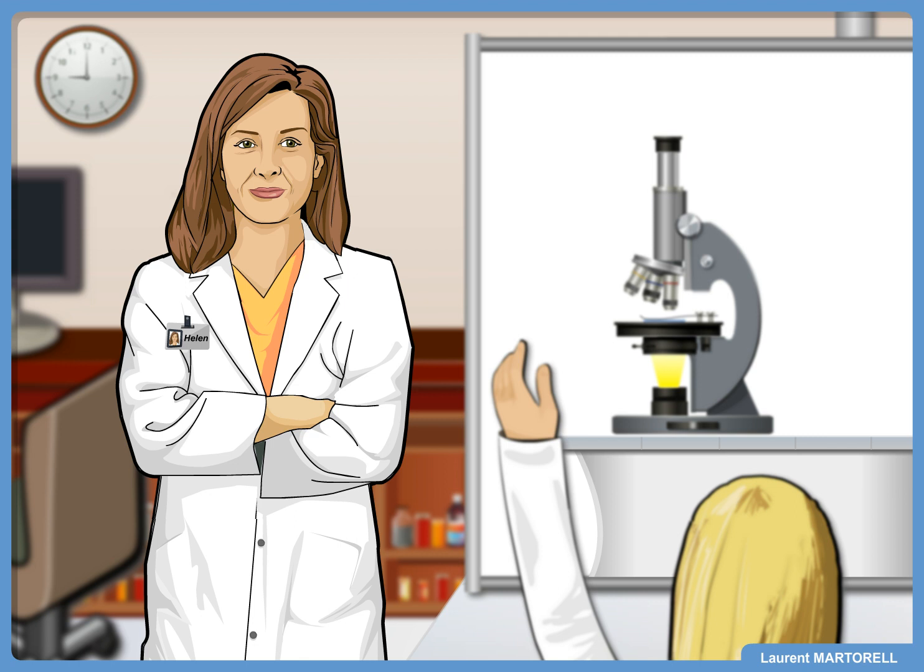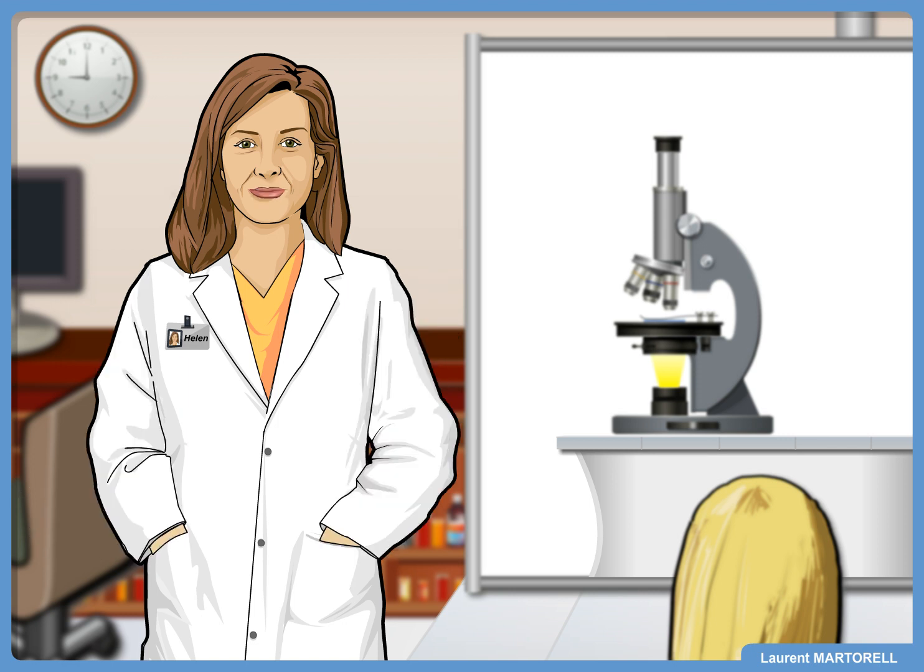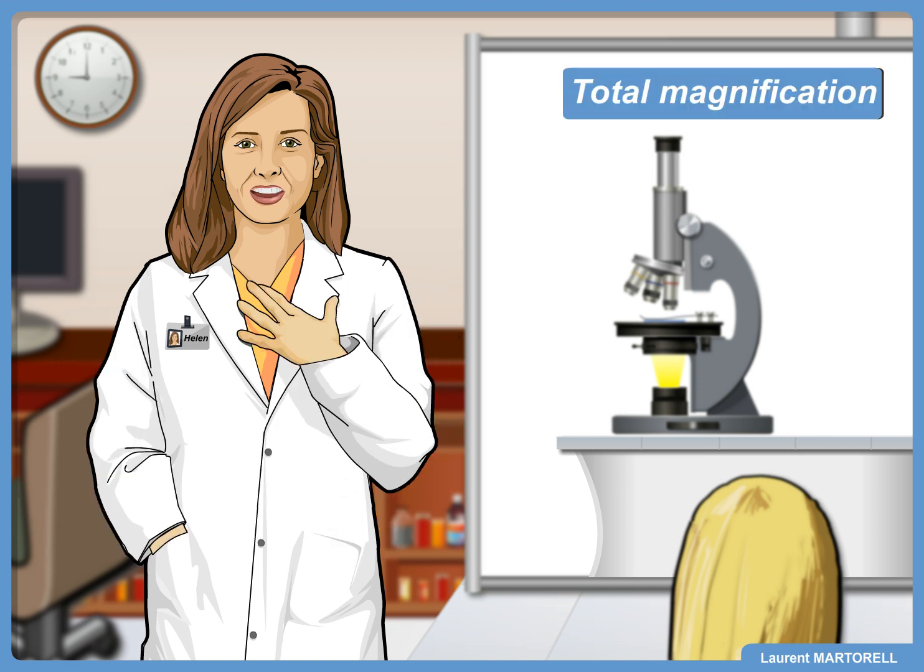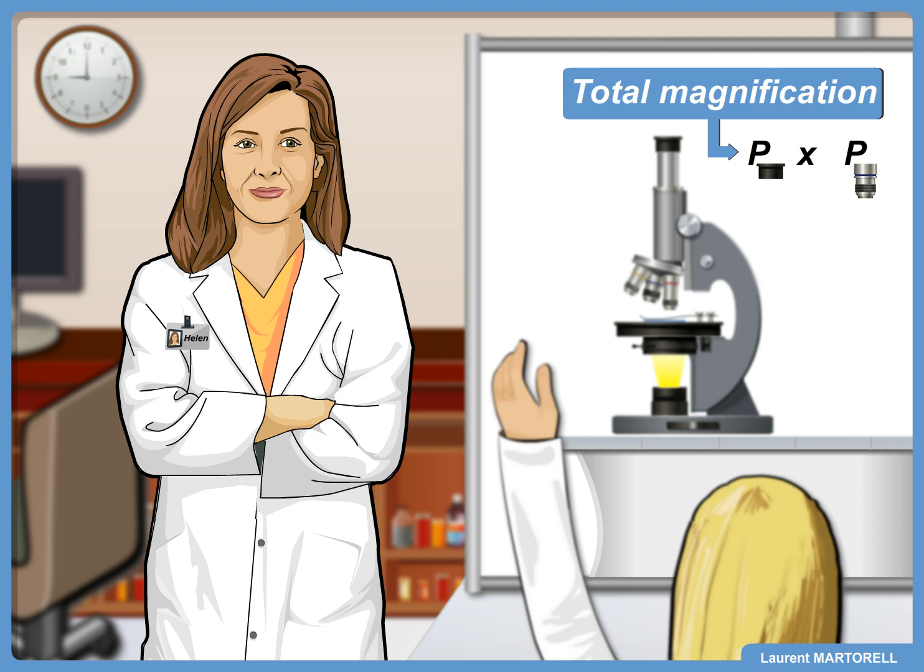How is the total magnification calculated? What an interesting question. As a matter of fact, the total magnification achieved by a microscope is calculated by multiplying the magnifying power of the objective by the magnifying power of the eyepiece. So the total magnification of a microscope ranges from a hundred to a thousand times.